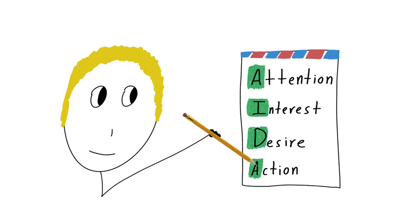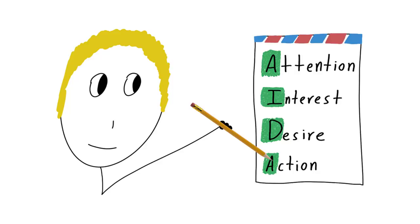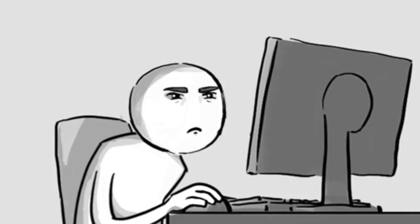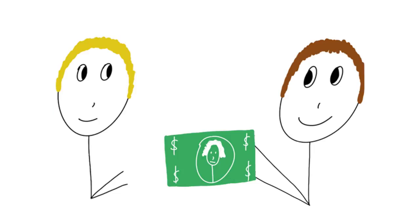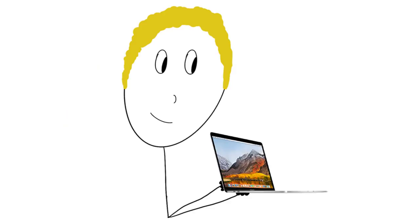The ADA formula is designed to lead people through a logical process that gets their attention, gets them interested, makes them desire the product internally, and then gives them a way to close the deal. Going through these steps in order is one of the best ways to convince someone to buy a product, buy a service, convince them of an idea, or take any action.